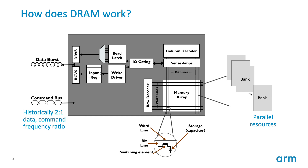This cartoon is a very high level depiction of how DRAM functions. We start with a 1T 1C bit cell, build it up into a larger array, and within that array we have parallel resources or banks that can be accessed concurrently. Different technologies have different levels of parallelism. When data is transferred it's transferred across multiple unit intervals defined by the burst length, and historically the data rate has been twice the command frequency.